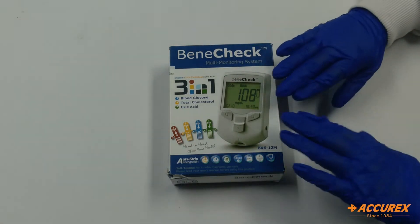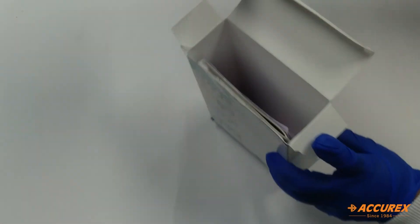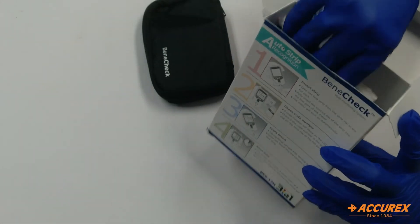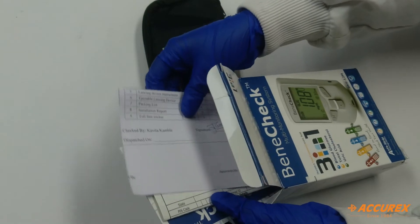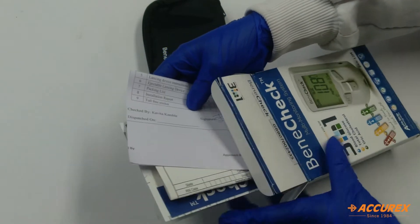First we will see what all comes with this box. Here is this black pouch and here there is all the packing list, warranty card and the user manual.